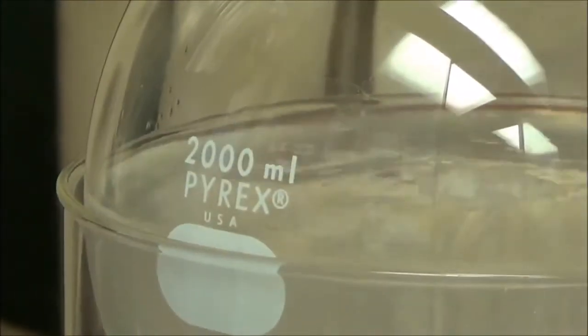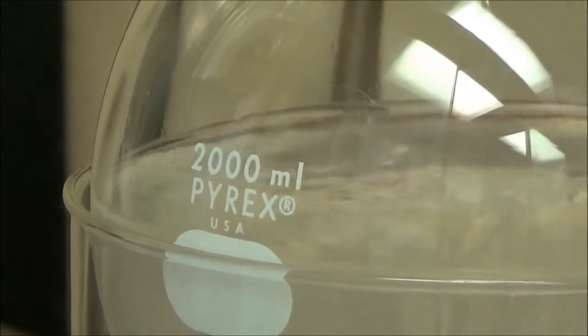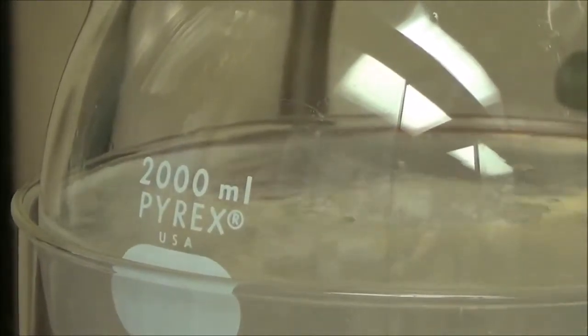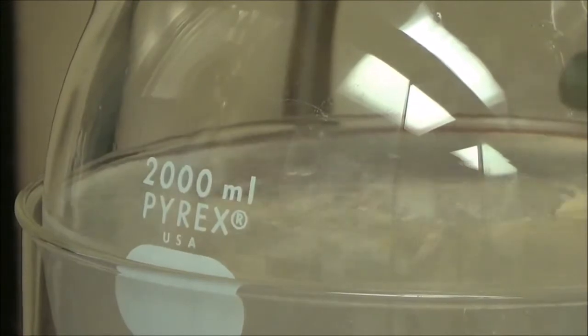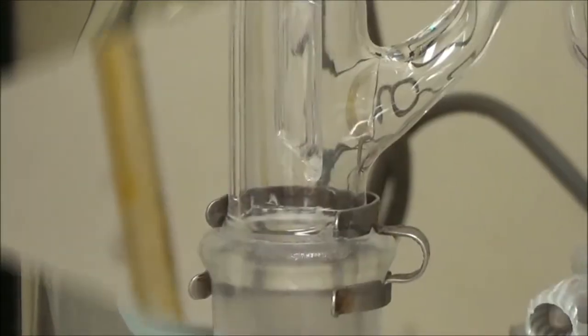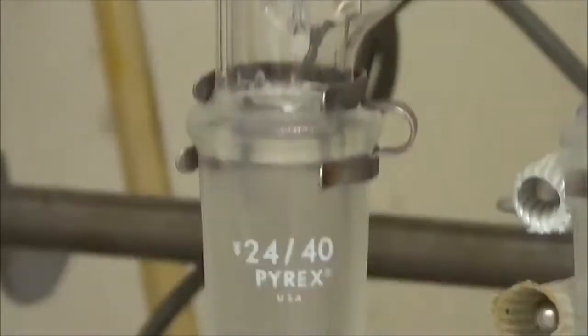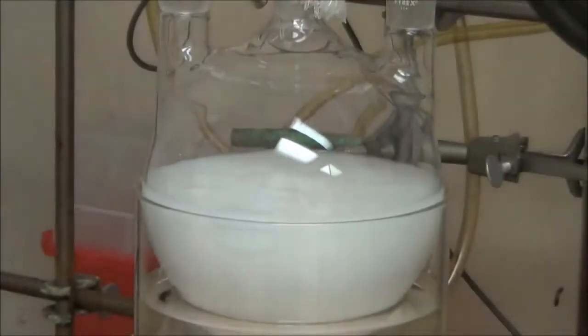You can see that the hexane is moderately refluxing. Now, it doesn't take very long before you can tell that a reaction is occurring by the formation of sodium bromide. That's the white powder that you now see in the hexane.